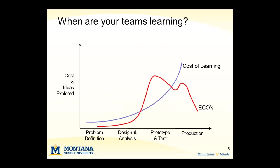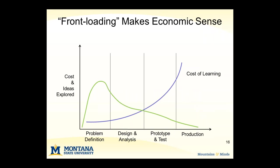Researchers in product development have found that there seem to be a lot more engineering changes later in the development cycle than earlier. This is counterintuitive when mapped on the cost of learning curve, because it looks like we're investigating new ideas when it's pretty expensive to do that. Wouldn't it be better to front-load the project so that you look at lots of ideas early on, where it's relatively inexpensive, so that when you get into later phases, you're not having to make so many changes?